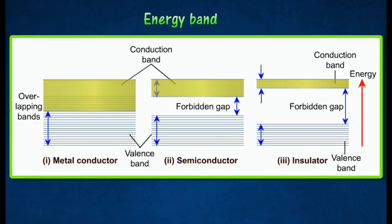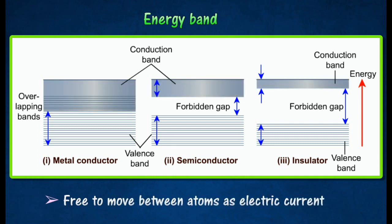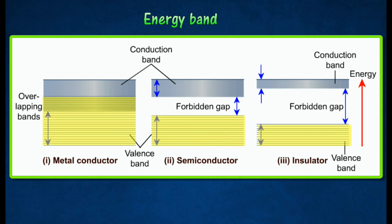Energy bands of crystalline solids are made up of the upper conduction band occupied by conduction electrons that are free to move between atoms as electric current. The lower valence band is occupied by valence electrons that are tightly bound to their atoms and are not free to move about.